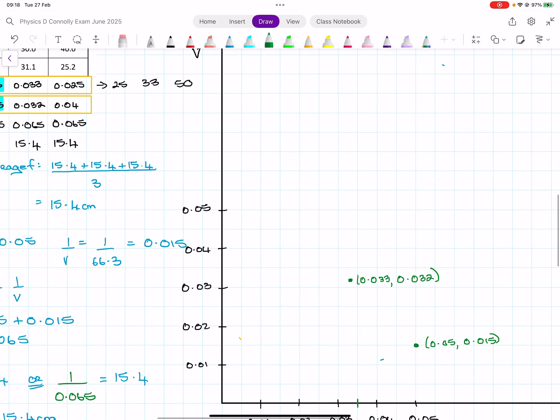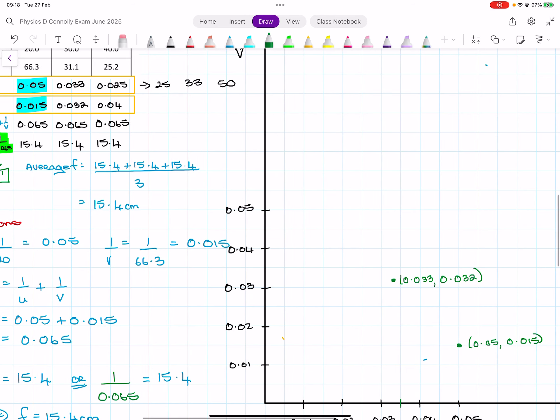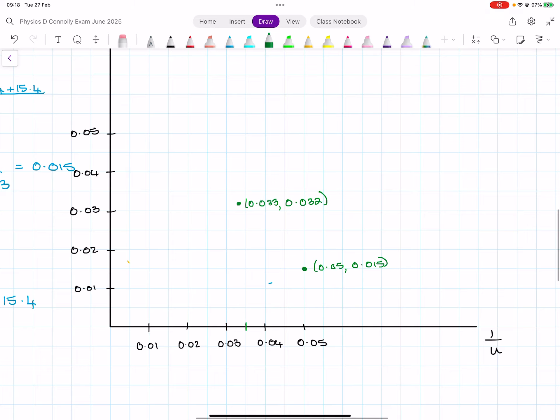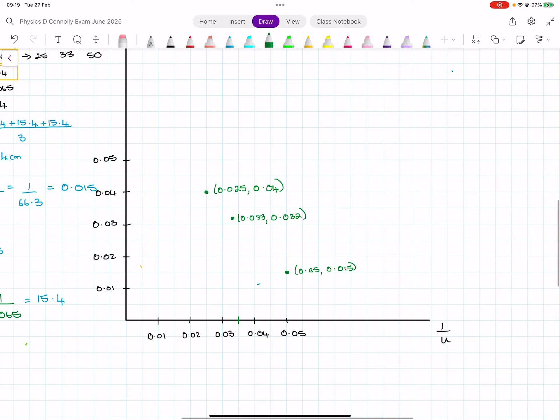And the last one then is 25 and 0.04. So that is 0.025 and 0.04. Now, once we have our dots, all of the graphs that we did in mechanics were always straight lines through the origin, and this isn't that.